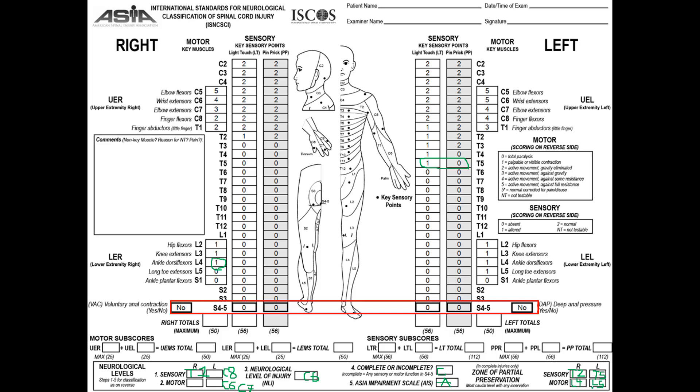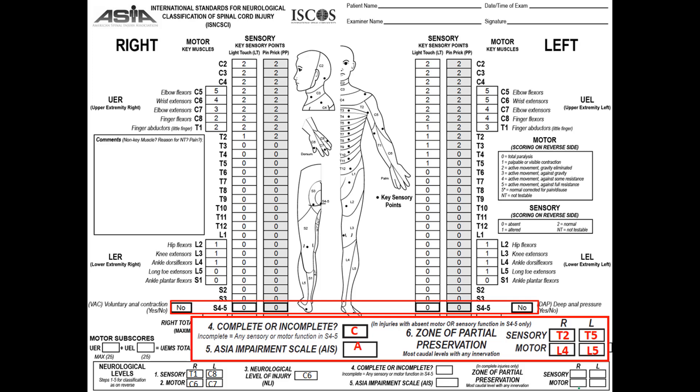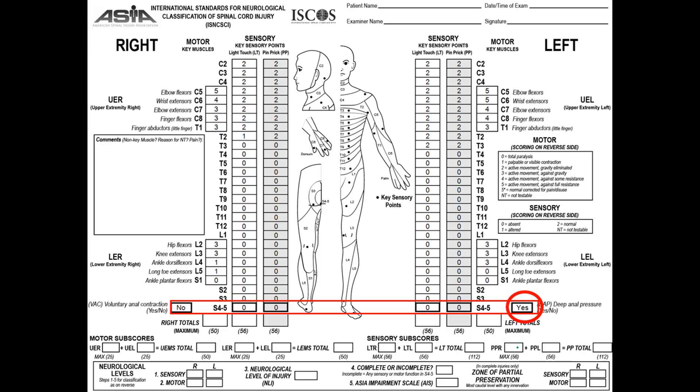Let's check our answers: T2, T5, L4, L5. With that, we've completed filling the ASIA sheet. Let's take another example.